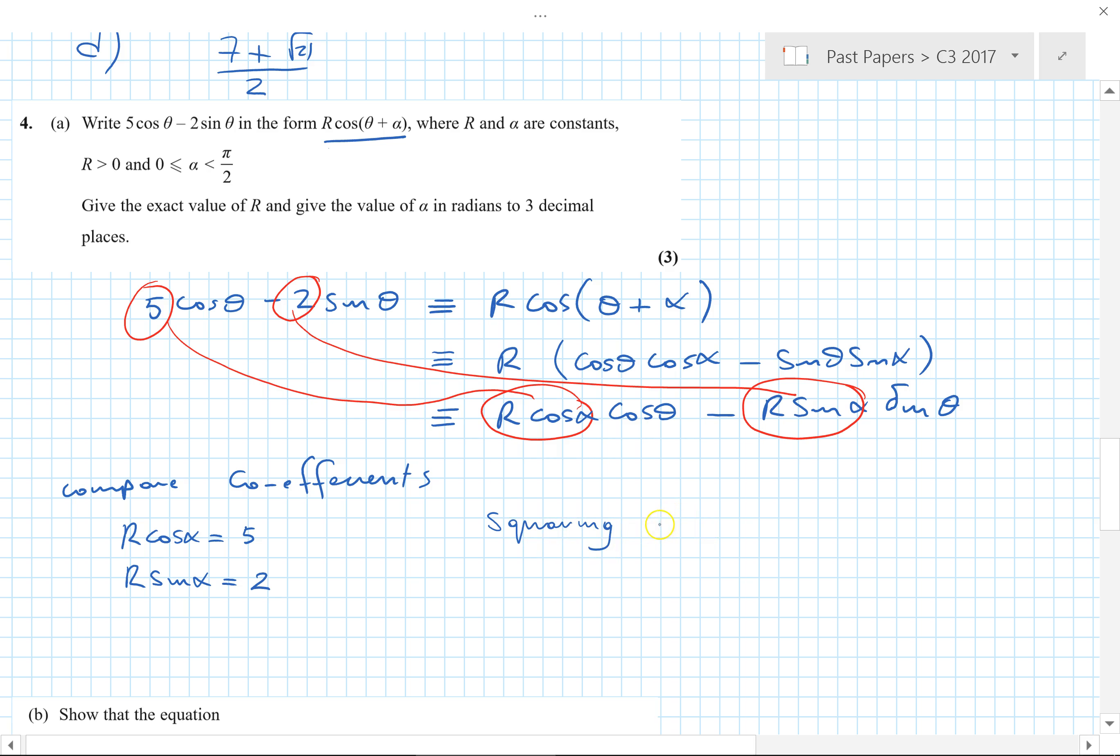So I'm going to square and add. I know some people draw a triangle here, that's good, that's fine. I'm going to do it this way. So we have r squared cos squared alpha plus r squared sin squared alpha equals 5 squared plus 2 squared, which is equal to 29. But here we've got cos squared plus sin squared, which is equal to 1. So we have r squared equals 29, r equals the square root of 29. Notice it wants the exact value of r. So anyone who actually did some other method, maybe worked out alpha first and then used an inexact value for alpha to work out r, would have lost a mark.